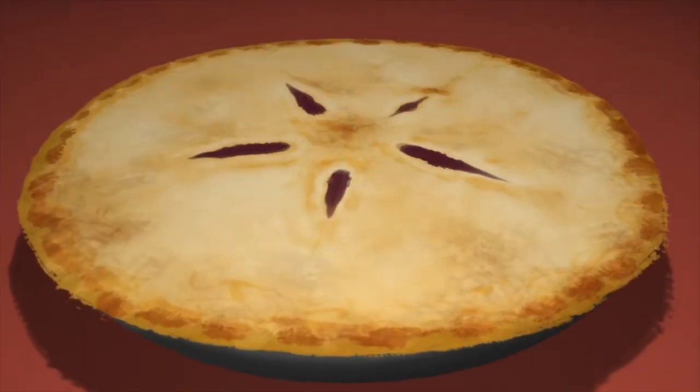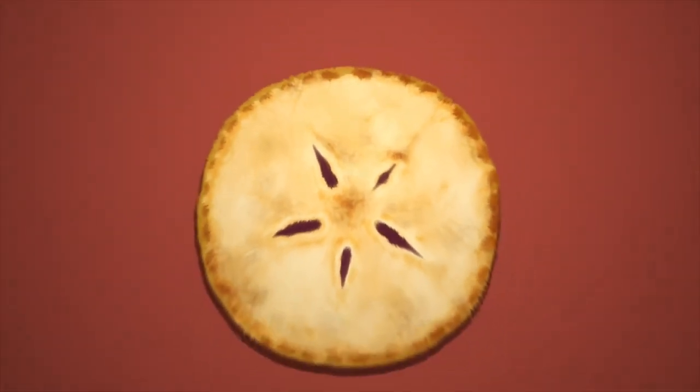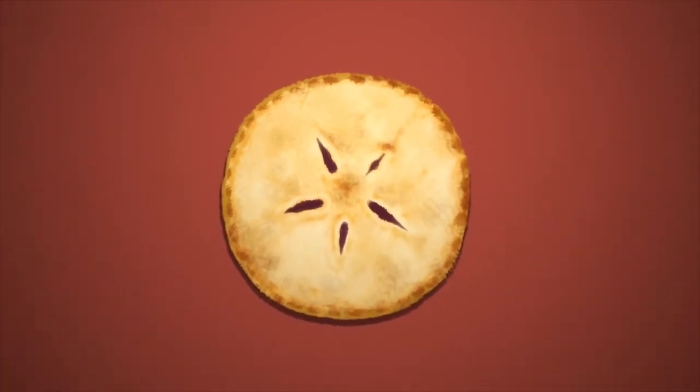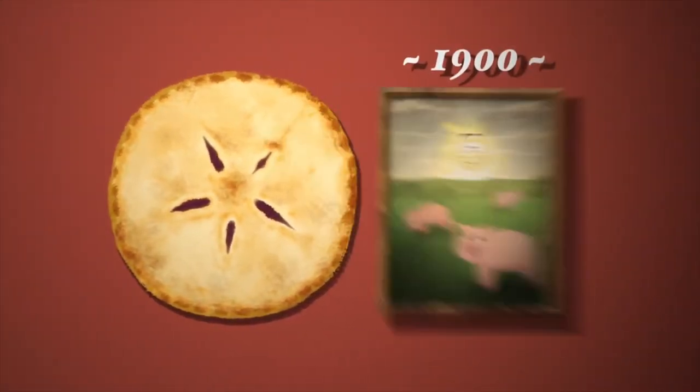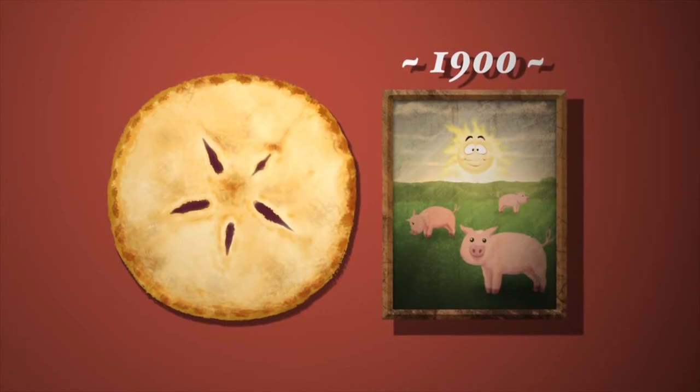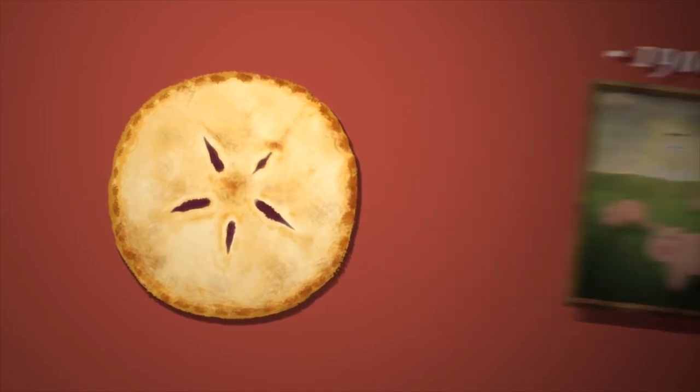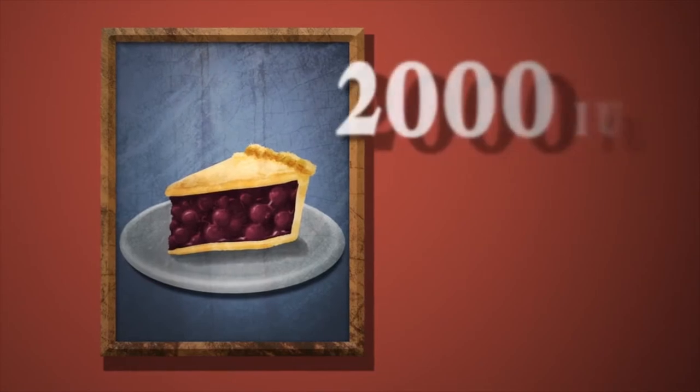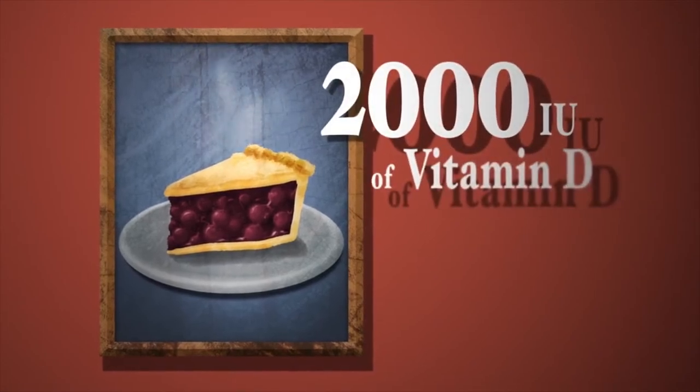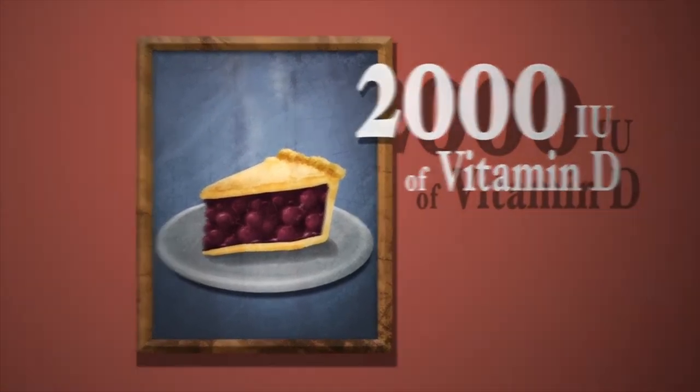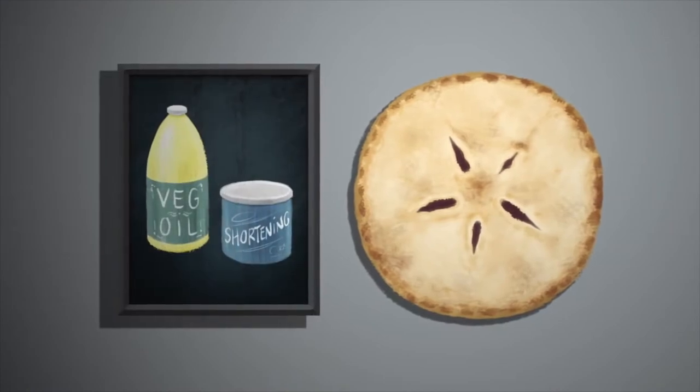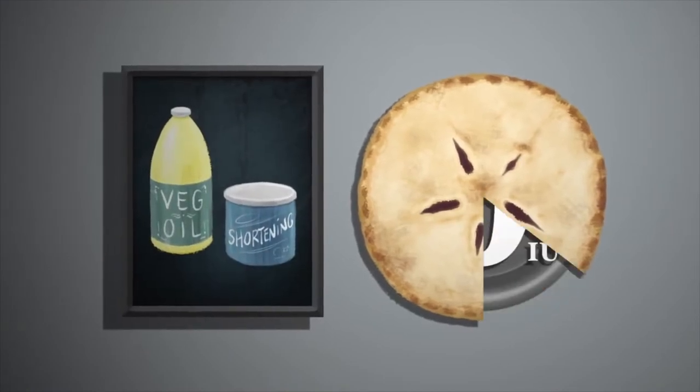Even food no longer provides as much vitamin D as it did 100 years ago. For example, in 1900, pie crust was made with lard from pigs raised outdoors. Back then, just one piece of a double-crust pie provided 2,000 international units of vitamin D. Today, pie crust is made from vegetable oil or shortening. How much vitamin D? Zero.